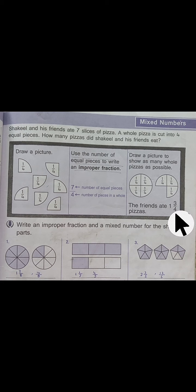Now come to improper fraction. Use the number of equal pieces to write an improper fraction. You have 7 parts which Shaquille and his friends ate. One pizza has 4 parts inside. If you write this in the same form, numerator is 7 colored parts, and total parts, one pizza has 4 parts. This is improper fraction.